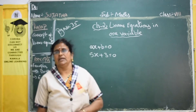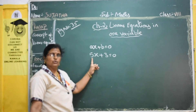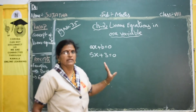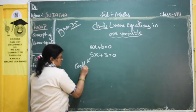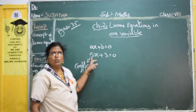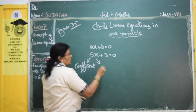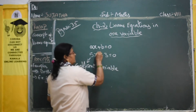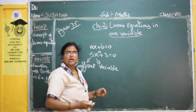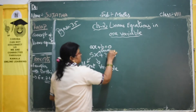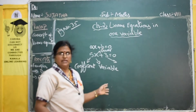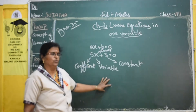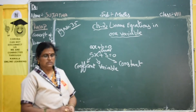What are the parts of a linear equation? There are four parts: coefficient, variable, power, and constant. The number beside the variable is the coefficient. The alphabet we use is called the variable. The number written on the variable is the power. The number without a variable is called the constant. These four parts are compulsory to learn.